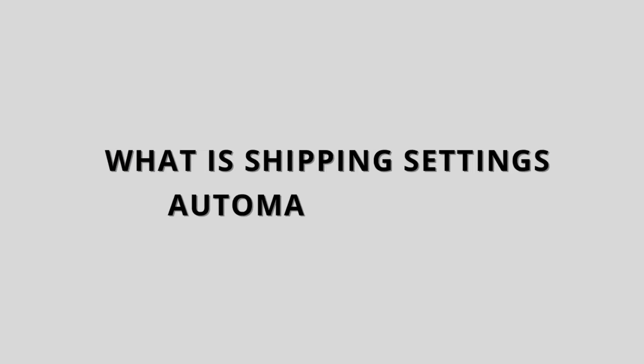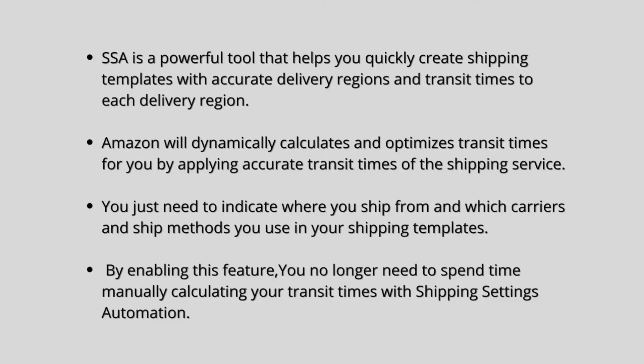What is shipping settings automation? Shipping settings automation is a powerful tool that helps you quickly create shipping templates with accurate delivery regions and transit times to each delivery region. Amazon dynamically calculates and optimizes transit times for you by applying accurate transit times of the shipping service.